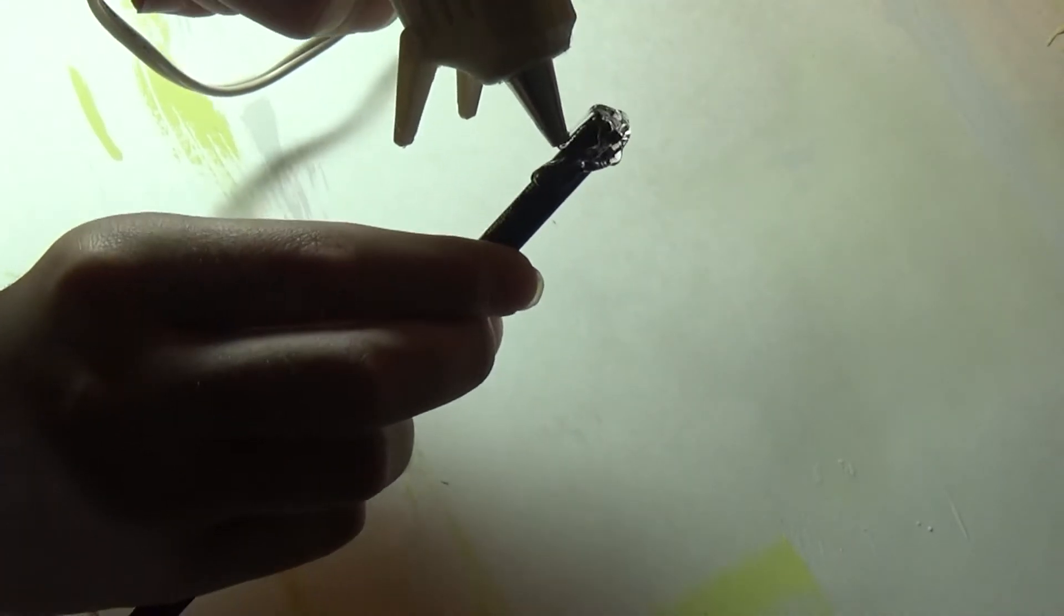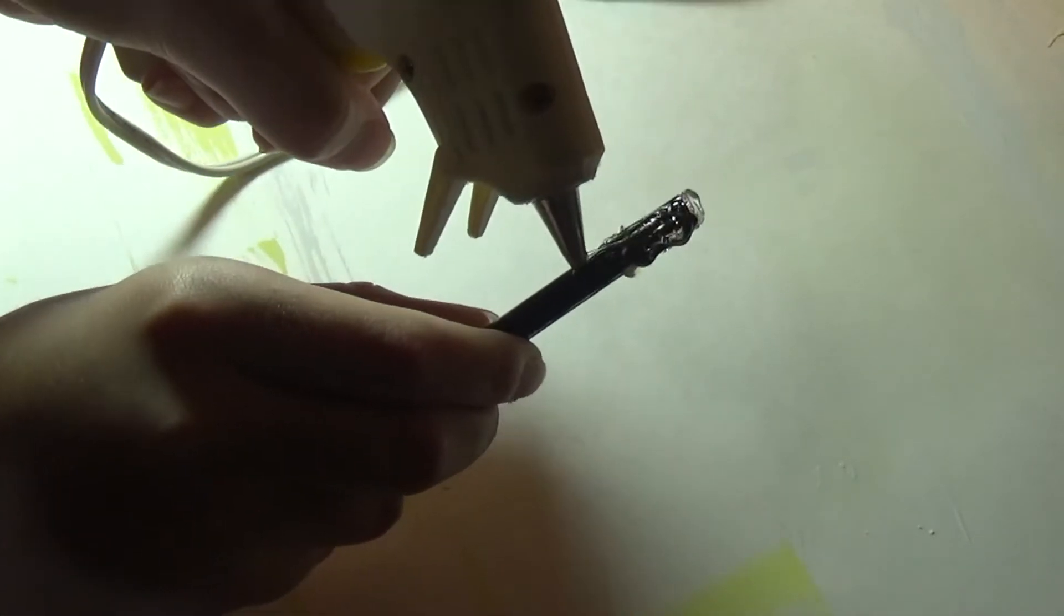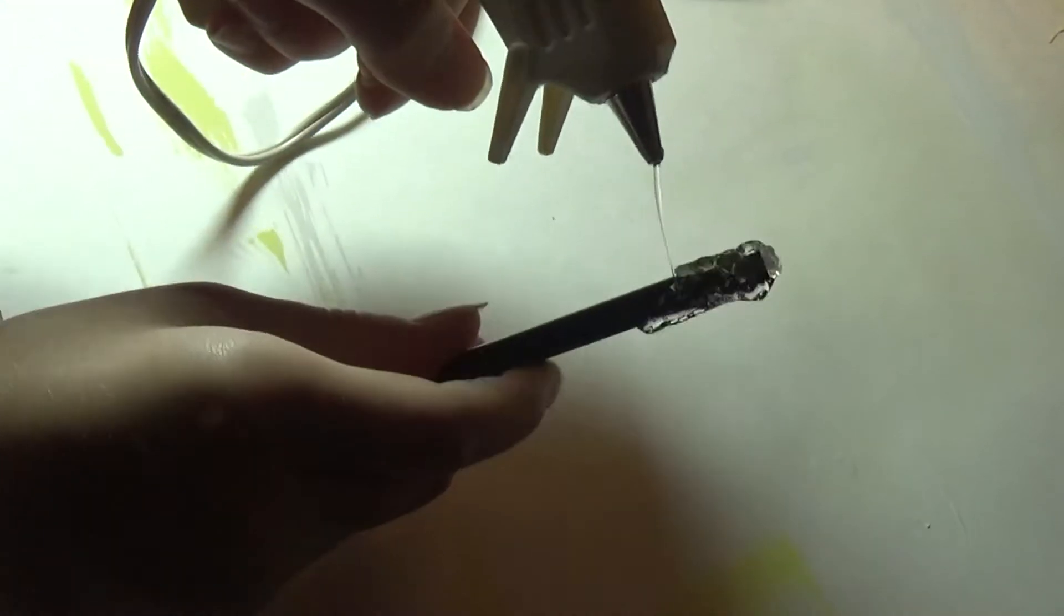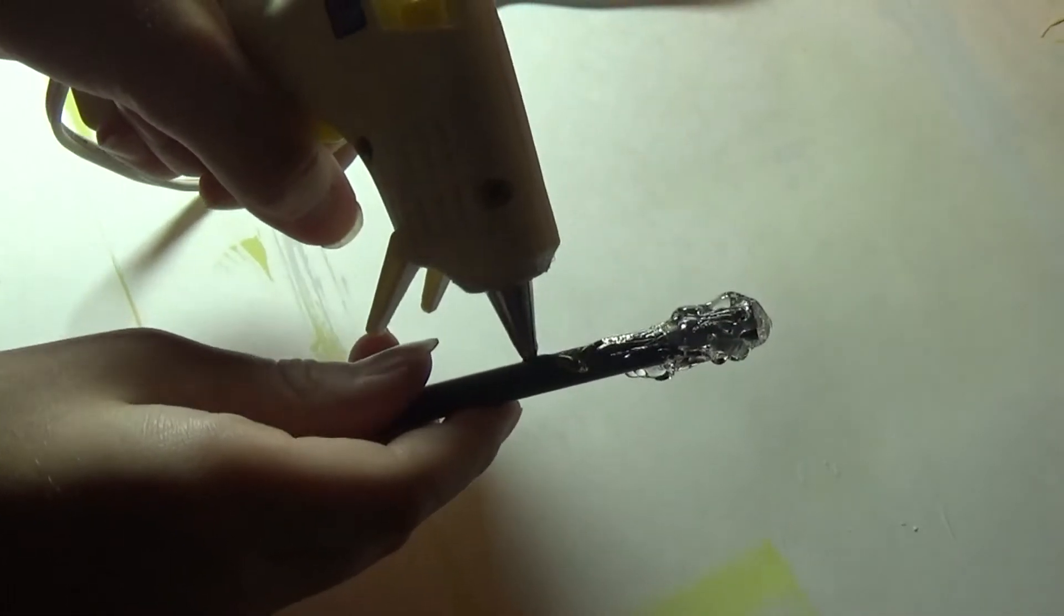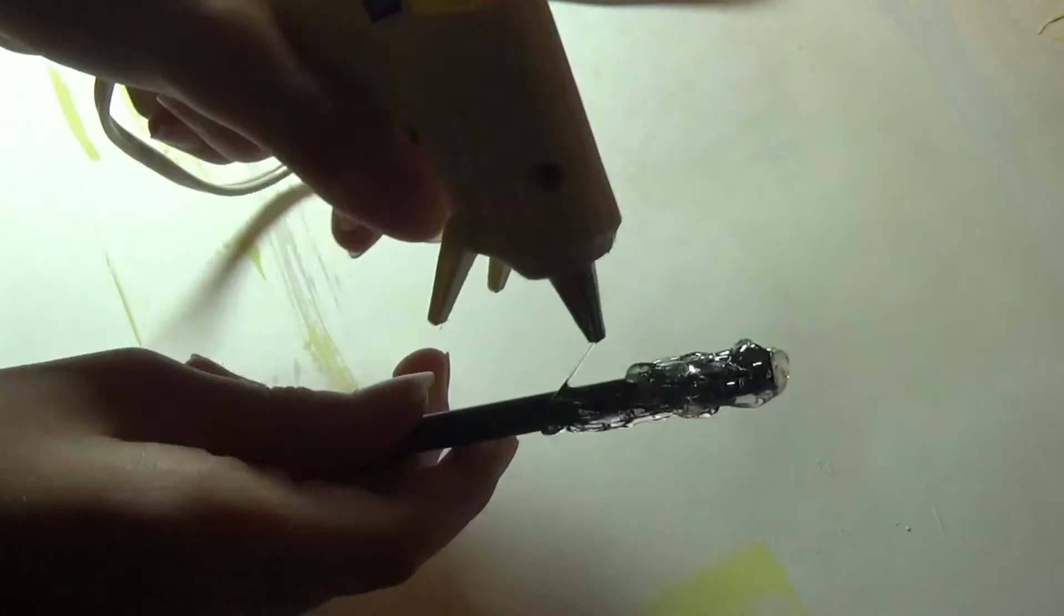Start hot gluing a design. First you want to do the handle to the top of the colored pencil, or you can use a pencil or a pen, whatever you have on you. And then you can add different vines or designs onto it until you're happy with the shape of it.